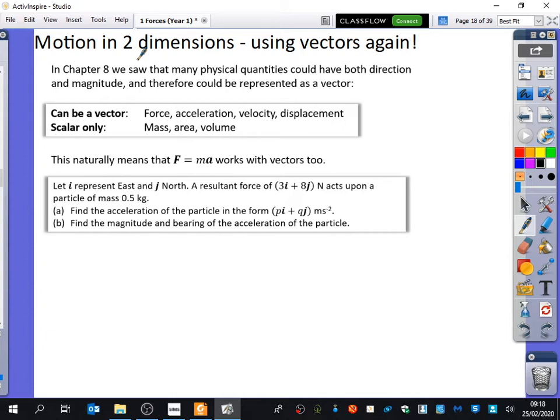So I've written here that in chapter 8, we saw that many physical quantities could have both direction and magnitude, and therefore they could be represented as a vector. So just as a reminder, these things can be represented as a vector: forces, acceleration, velocity, displacement. But the ones that are scalar only are things like mass, area, volume, time. These are some of the things that are scalar.